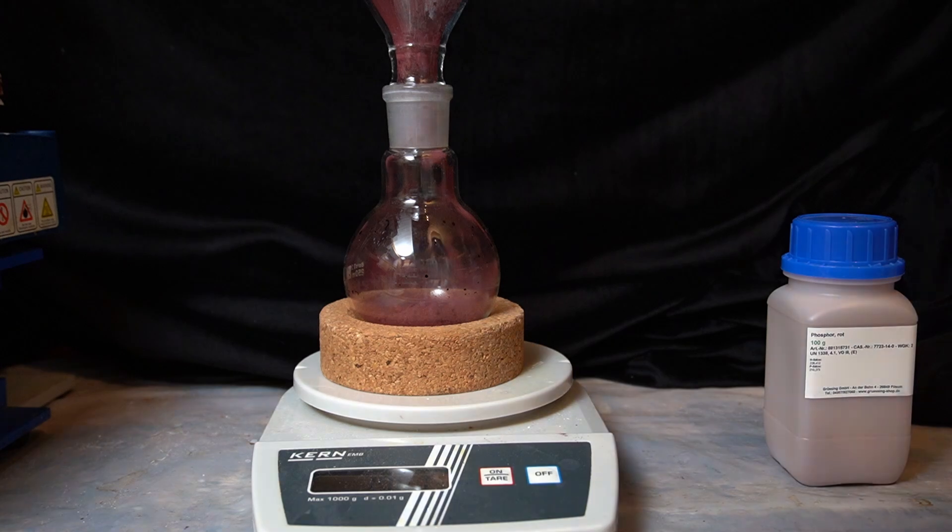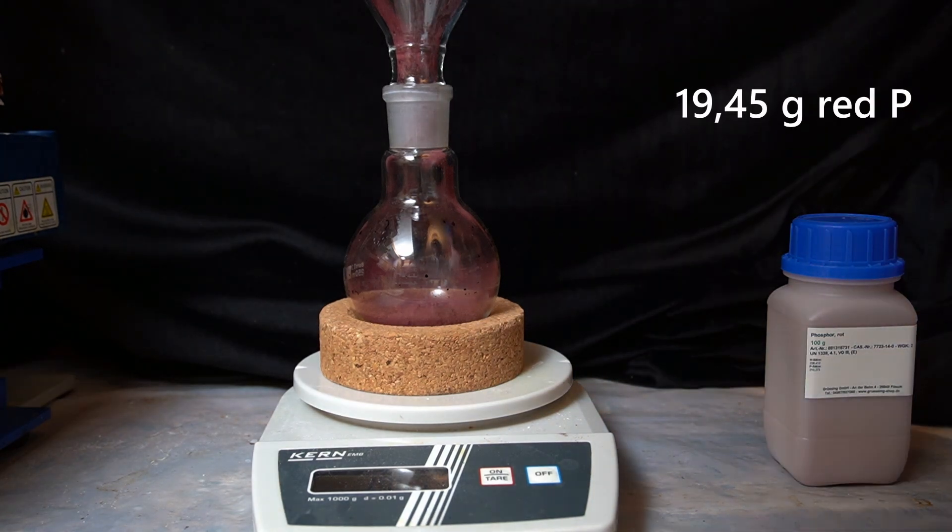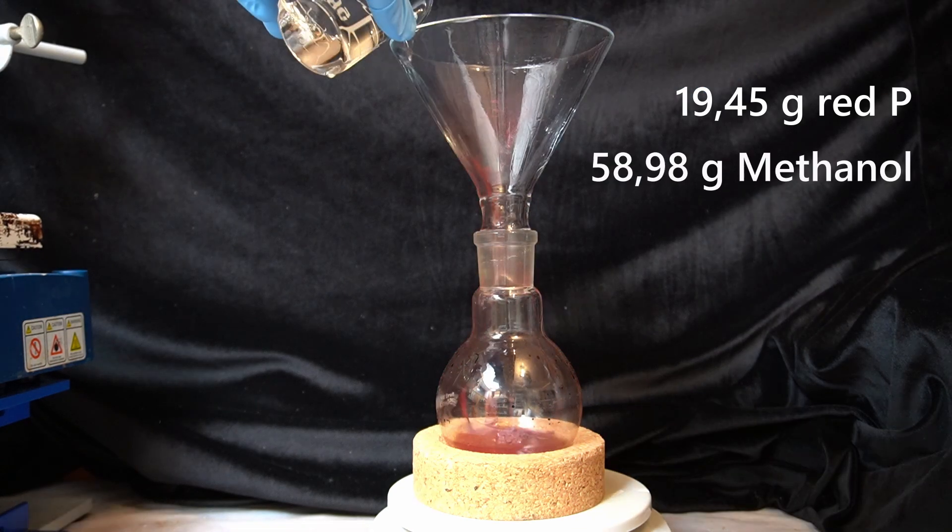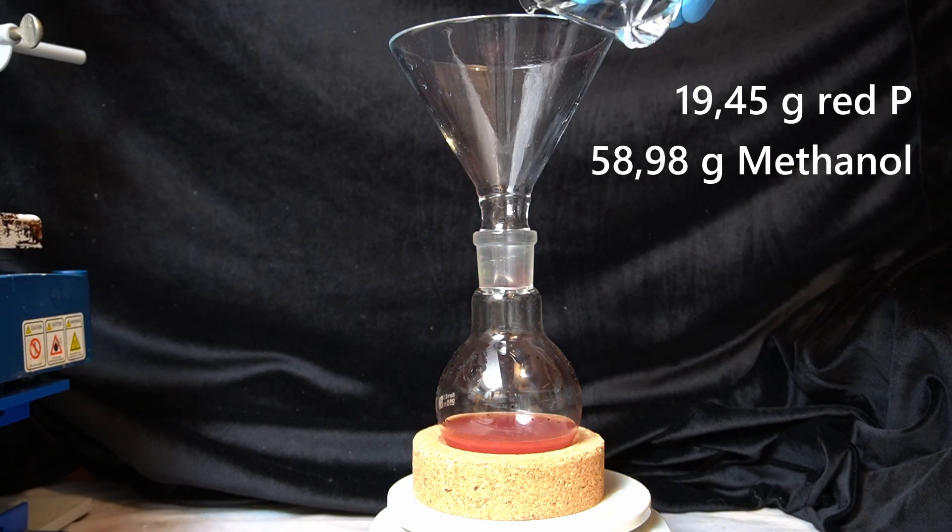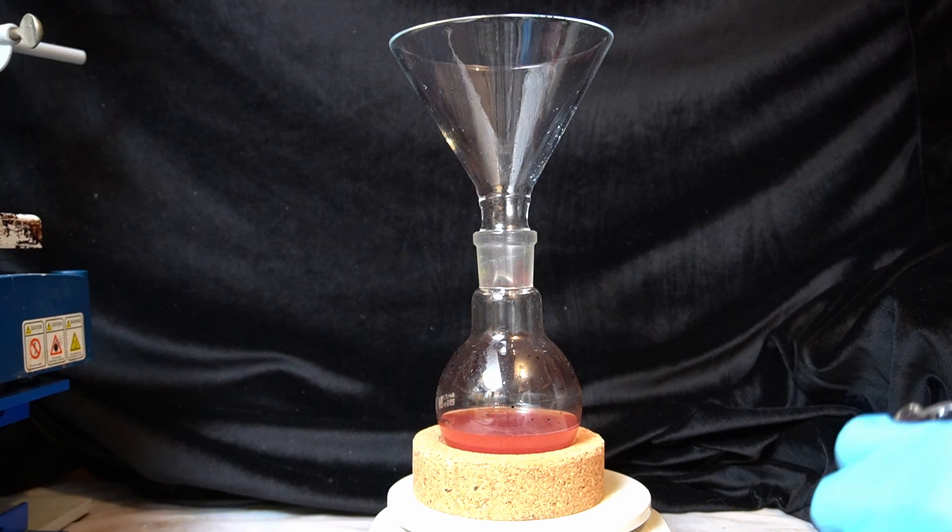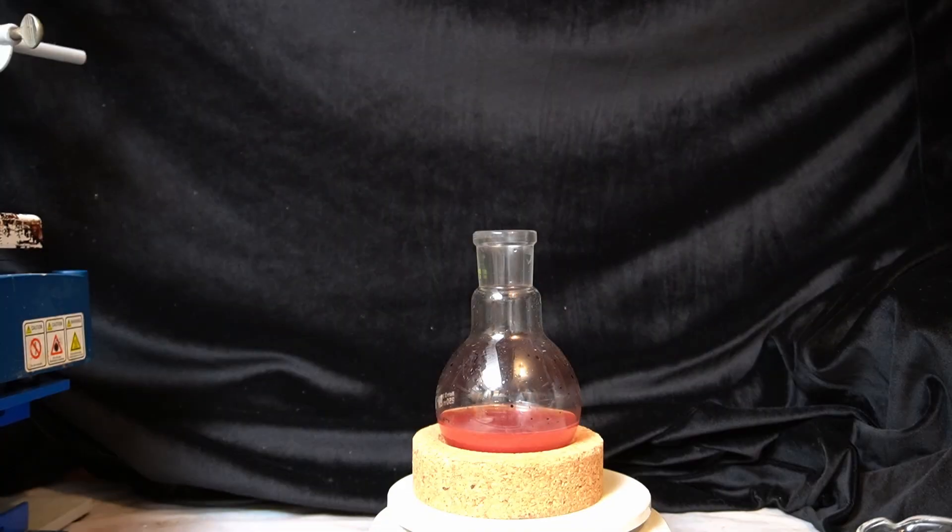Into a 250ml flask, I add 19.45 grams of red phosphorus, and I then wash it down with 58.98 grams of methanol. Red phosphorus stains horribly and it's a bit of a pain to remove, but I'll give some cleaning tips in the end.